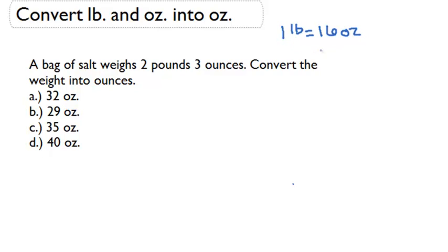If 1 pound equals 16 ounces and we have 2 pounds, we know that we're going to have to multiply that by 16, because for each pound we have 16 ounces. So we have 2 times 16, which gives us 32 ounces.